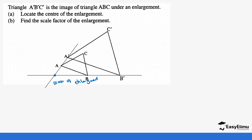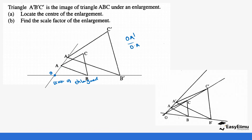After finding the center of enlargement, we need to find the scale factor. You measure the distance OA and OA' using a ruler. Then you do OA' divided by OA to get the scale factor. In our case, OA' is 2.5 and OA is 1.25, which gives us a scale factor of 2.